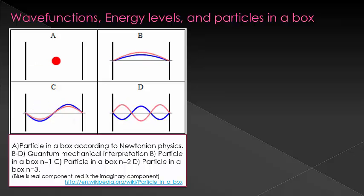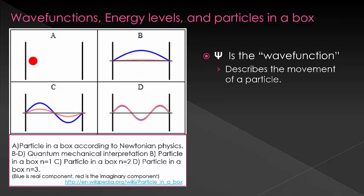Now, if these are waves, then that means we should be able to describe them by an equation. And in fact, we can. This equation is called the wave function, and is the equation that describes the movement of a particle. We use the symbol psi to denote this equation.